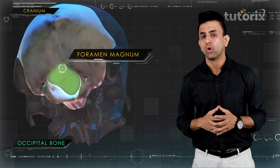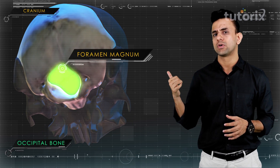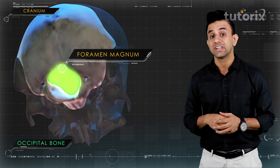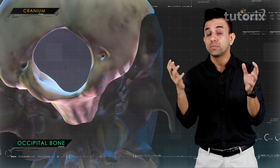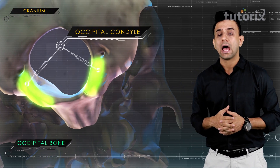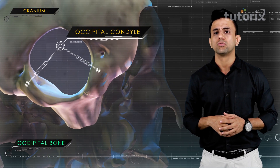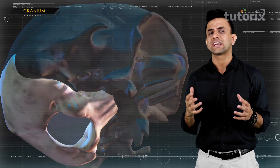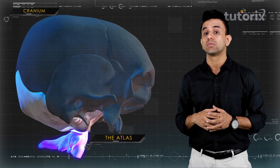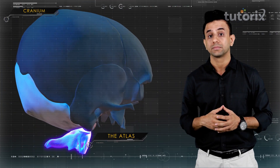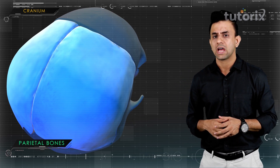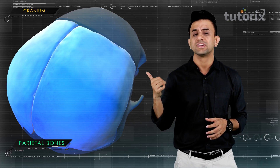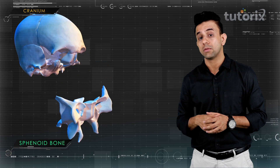The occipital bone forms the back of the head and, as already stated, has the foramen magnum. The occipital bone also has protuberances known as occipital condyles through which it connects with the atlas — the first cervical vertebra. The parietal bones are present at the sides of the skull.